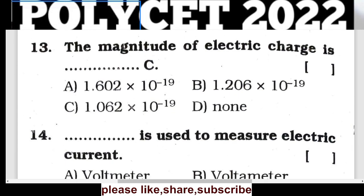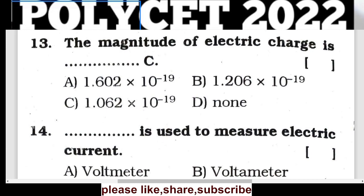Question 13: The magnitude of electric charge (charge of an electron) is 1.602 × 10⁻¹⁹ coulombs.